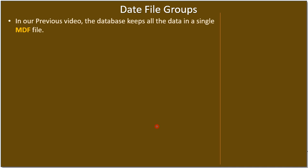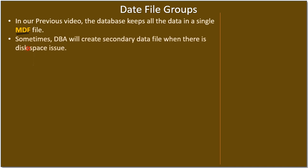When we created a database called C-Tube, the database keeps all data in a single MDF file. MDF is the file in which the database data gets stored. Sometimes a DBA will create a secondary data file when there is a disk space issue. For example, the primary data file may be occupying space on C Drive and disk space becomes very limited.